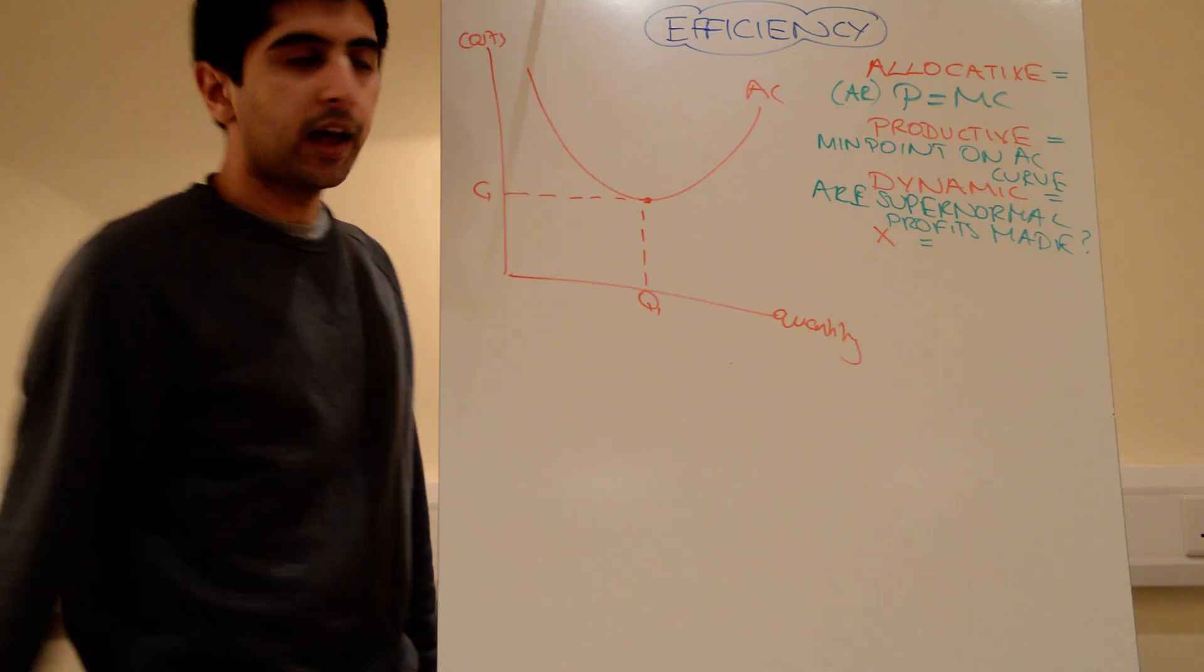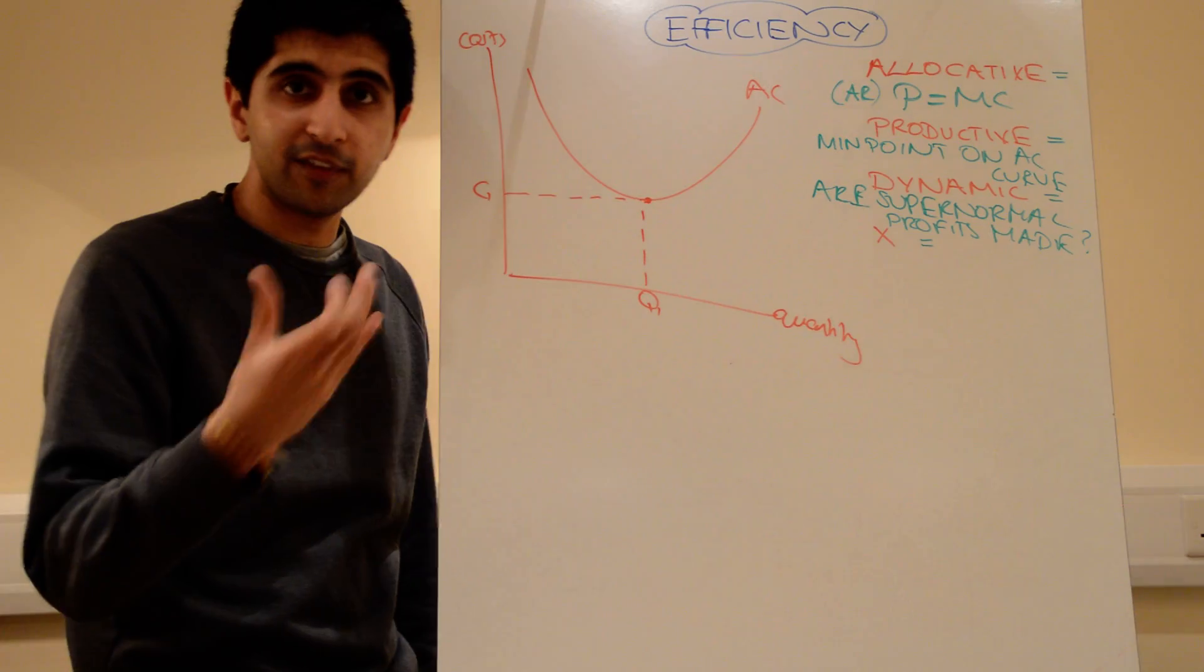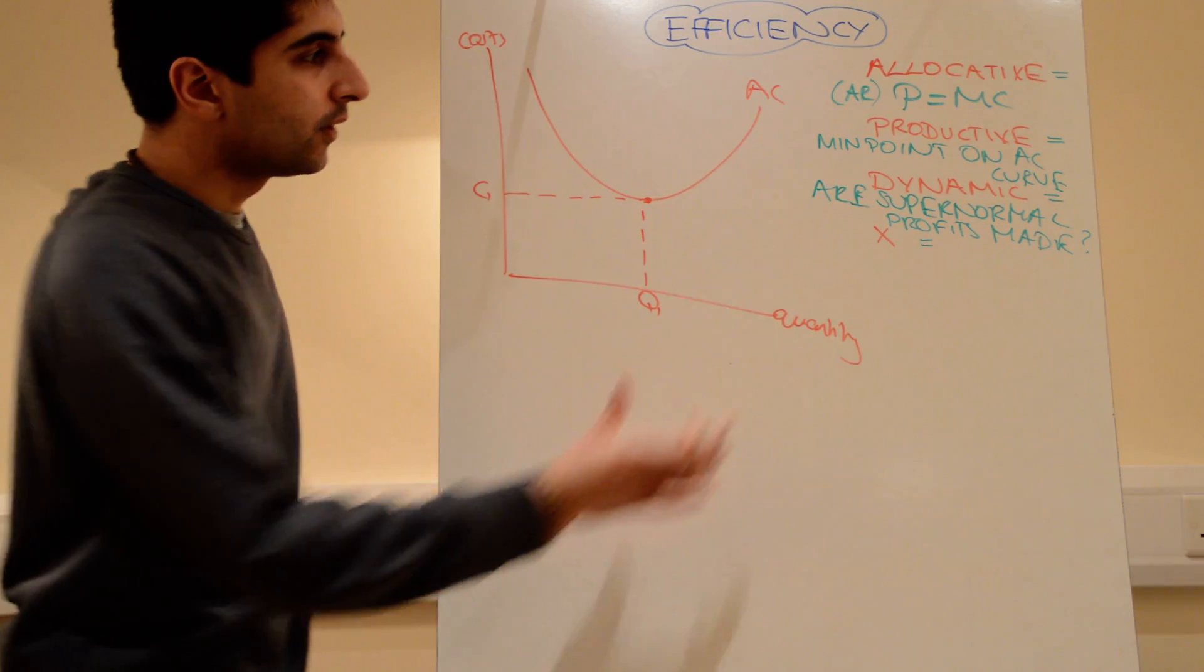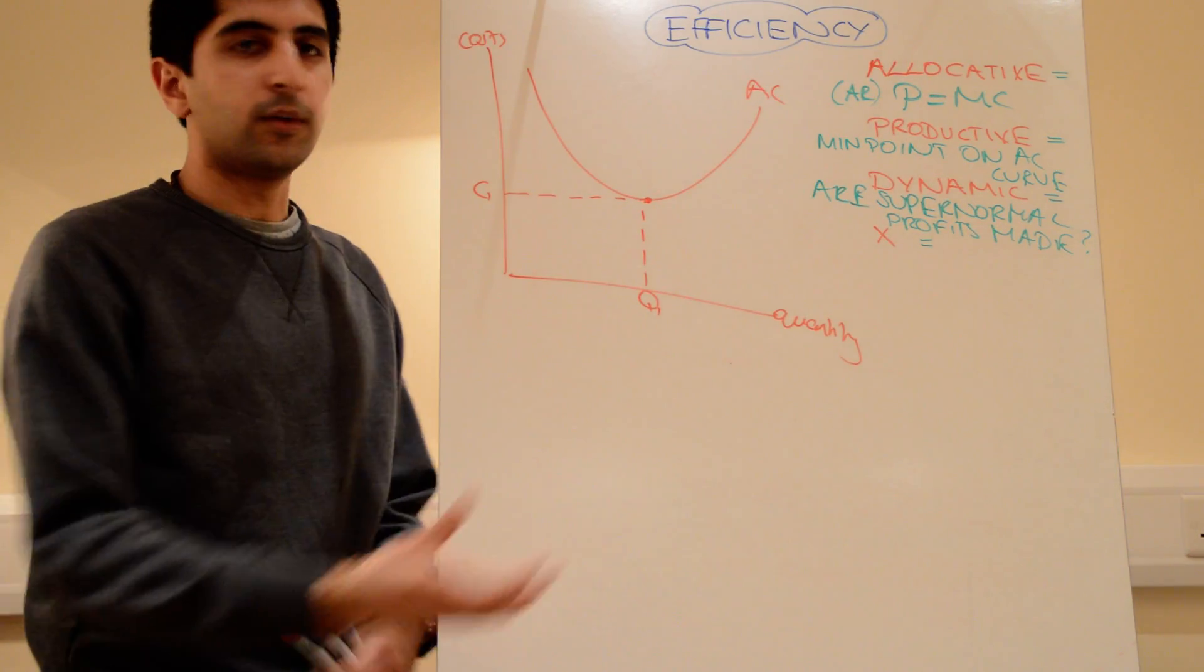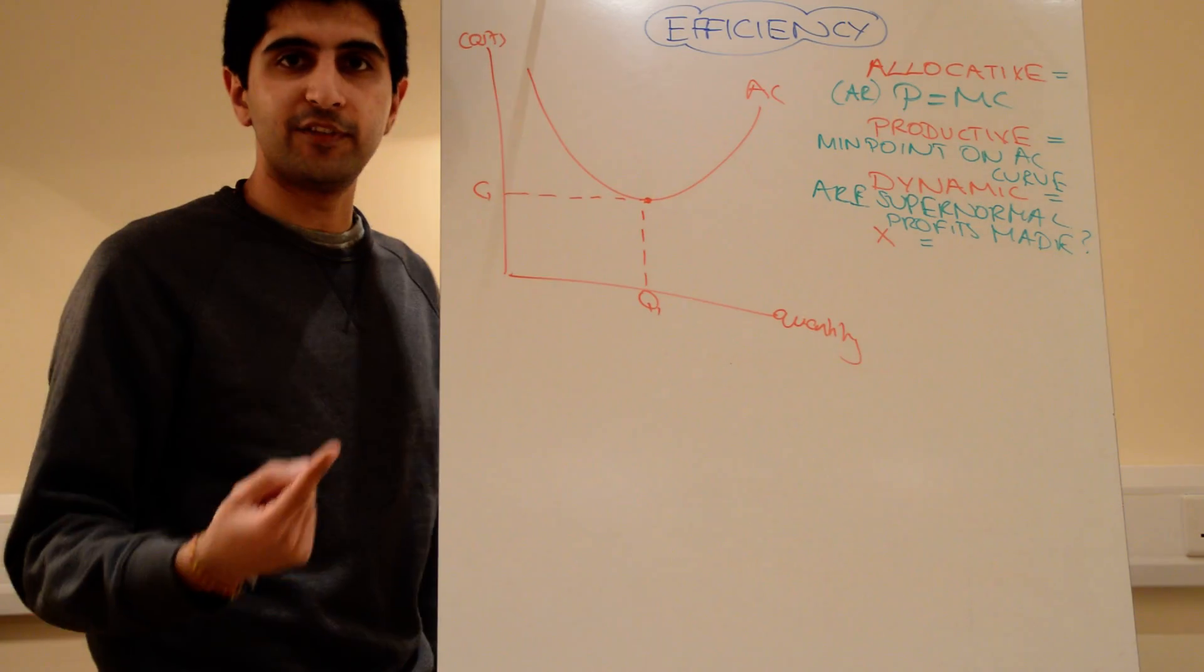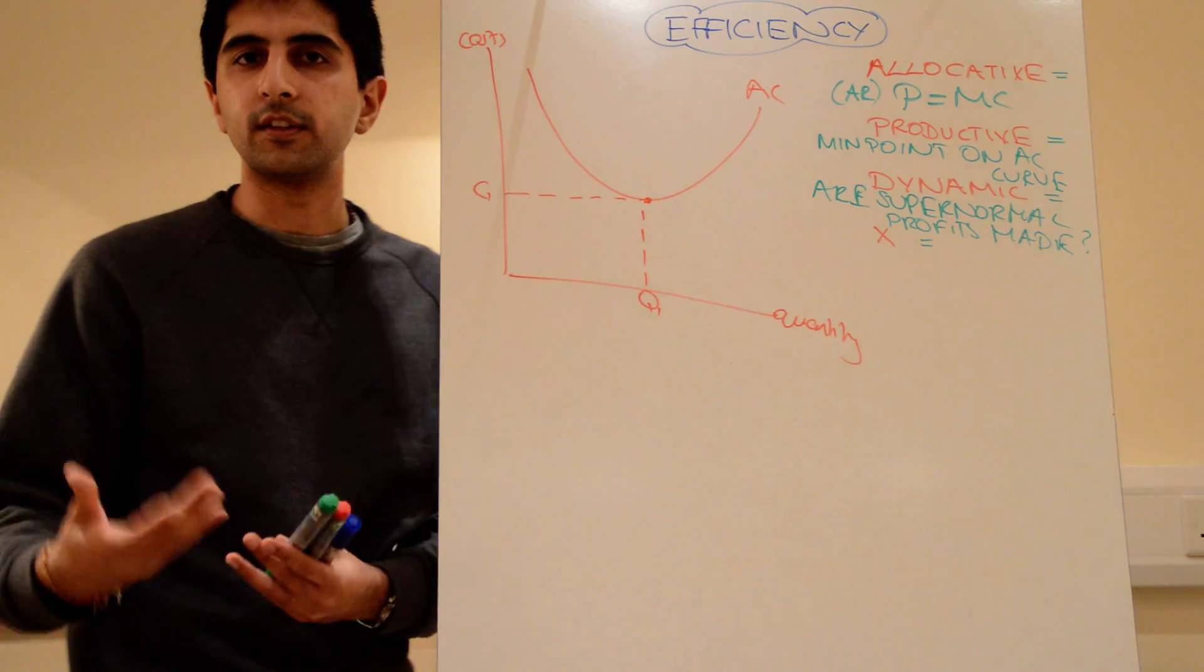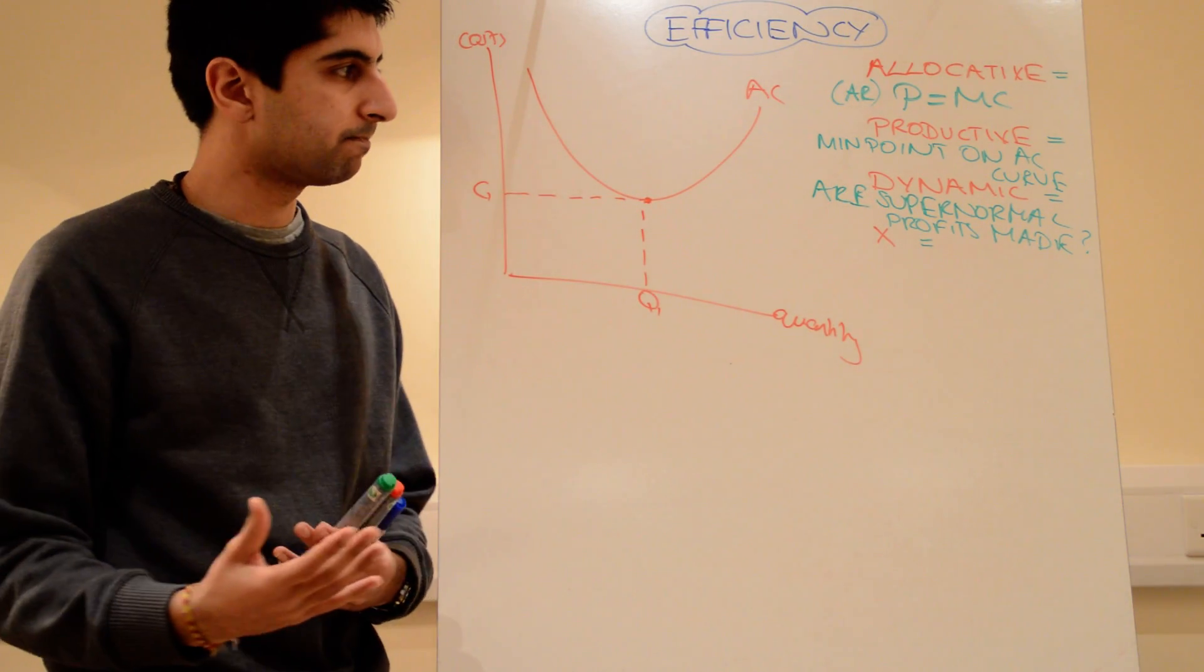If the answer to that question is yes, in a monopoly market structure, you might bring in dynamic efficiency and the fact that monopolies can exploit that. As long as there are supernormal profits, you can say that maybe there is a chance this firm could be dynamically efficient because it could reinvest supernormal profits and lower unit costs over time.